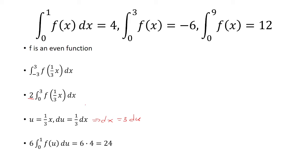I have a 2 outside already, and I'm going to multiply that by 3 to get 6. Now when x is 0, u is also 0. But when x is 3, u is 1. So that's how I have the integral from 0 to 1.